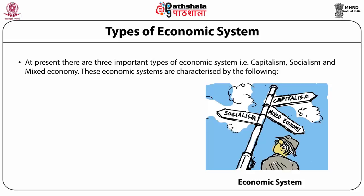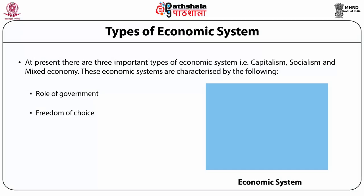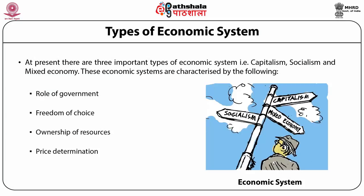There are various types of economic systems. Basically three important types are categorized in the world: capitalism, socialism, and mixed economy. These different economic systems are categorized by the following factors: the role of government, freedom of choice, ownership of resources, determination of price, and who gains the profits earned.